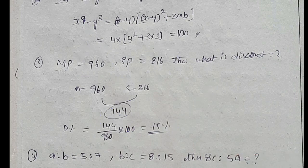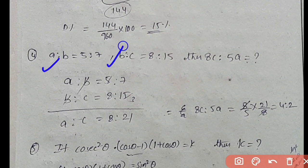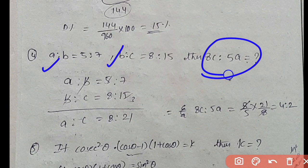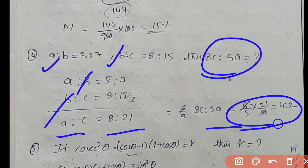Next: Ratio question. Given a:b and b:c, find 8c:5a. We find a:c by substitution. Easy to answer — ratios are easy to do.